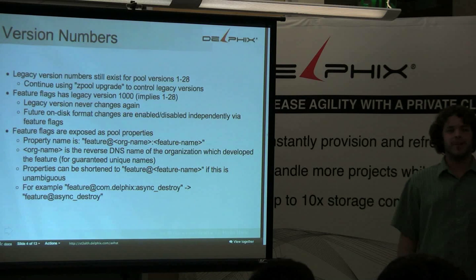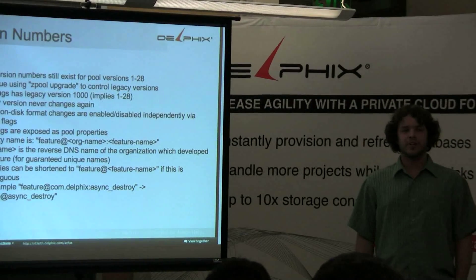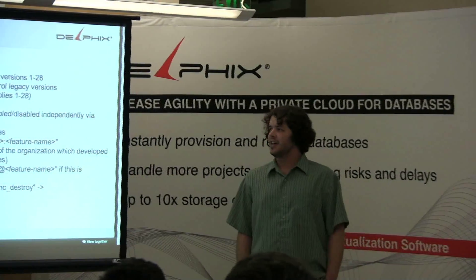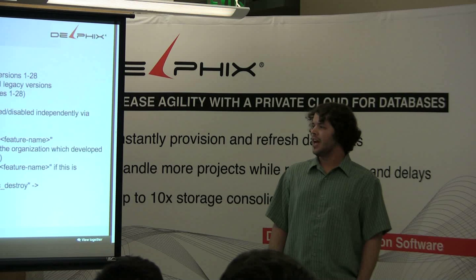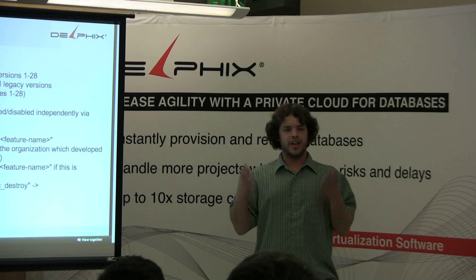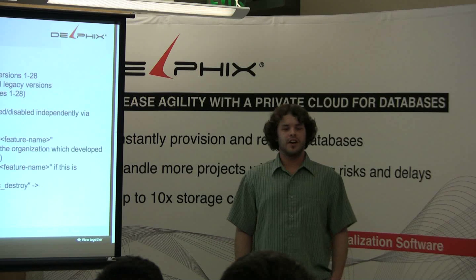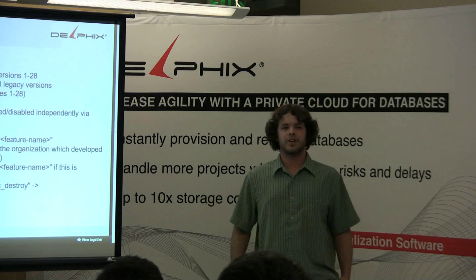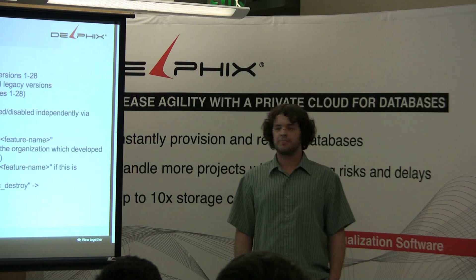Feature flags are given this arbitrary version number of 1,000 — it's far enough away that it's never going to conflict with anyone who continues to make version numbers. The idea is that at one point you enable feature flags, you set the version number to 1,000 and it never changes again. We've actually tried to remove it from the GUI and just say there's no longer a version number — you are running a feature flags pool. There will be independent flags for each on-disk feature, enabled independently, so you don't have artificial dependencies on lower version numbers. You can still have dependencies between features, and we'll get to that.